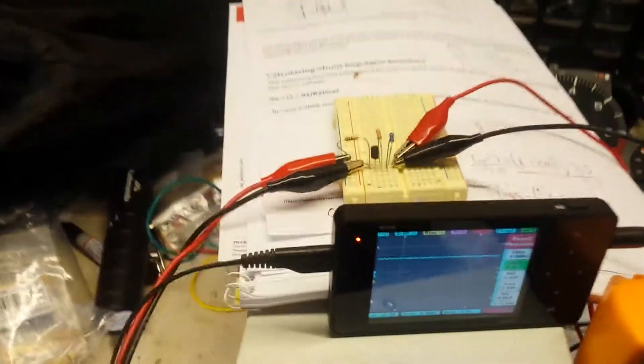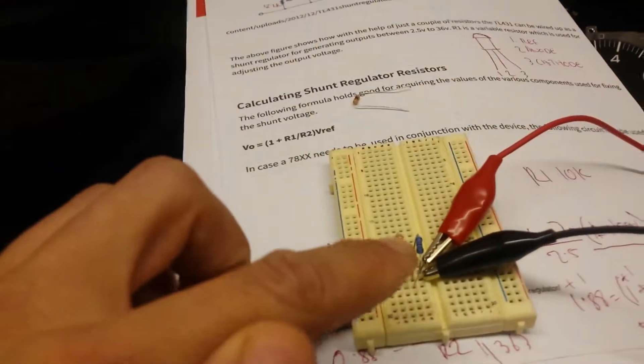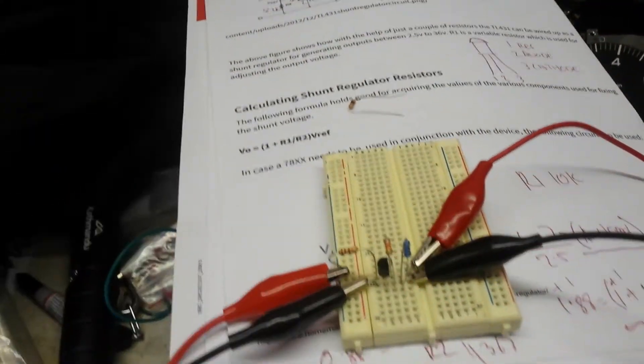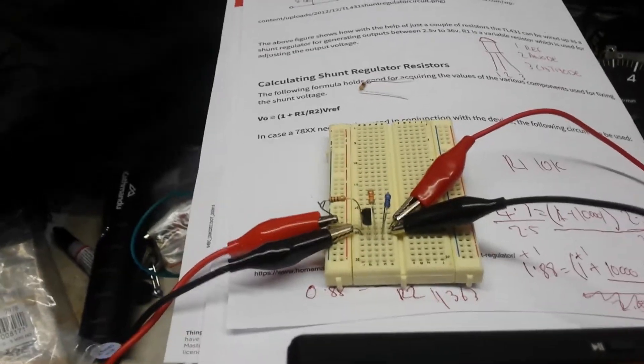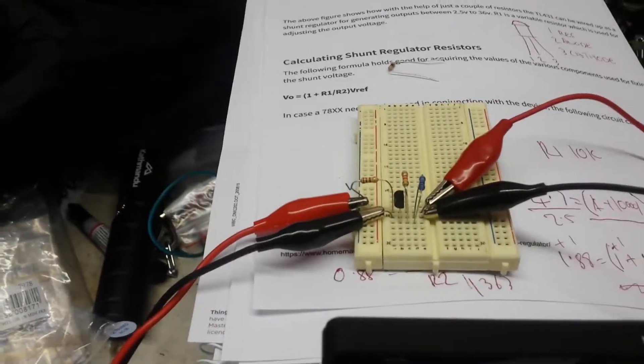This is totally adjustable with those two resistors. You can replace it with a variable resistor to make a completely variable voltage clamp.